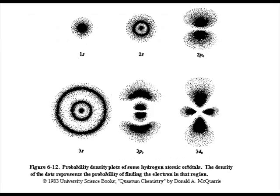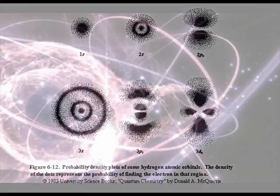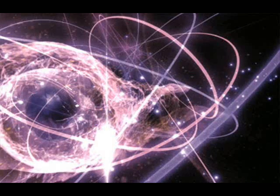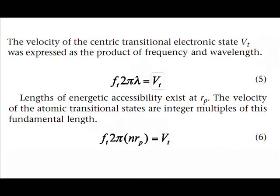During transition, electromagnetic and gravitomagnetic flux quickly flow from the parent to the daughter state. This rapid flow progresses by way of a strong electromagnetic and strong gravitomagnetic interaction. The velocity of the centric transitional electronic state, vt, was expressed as the product of its frequency, vt, and wavelength.